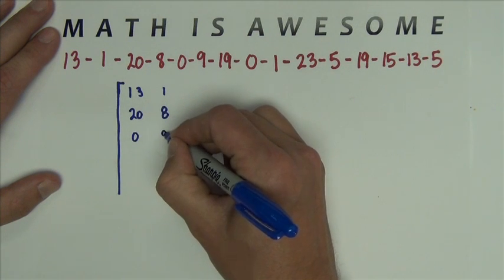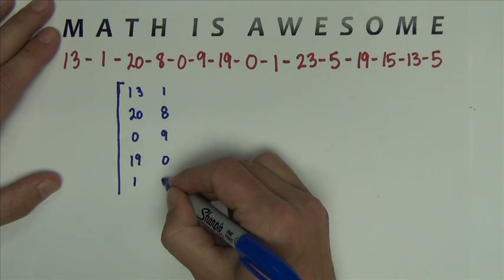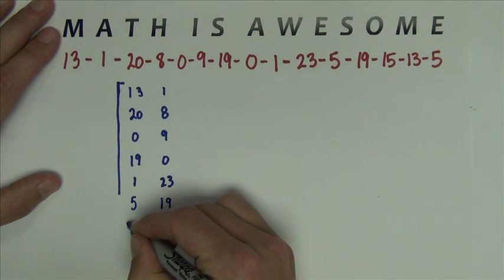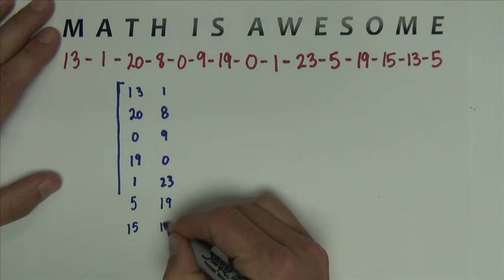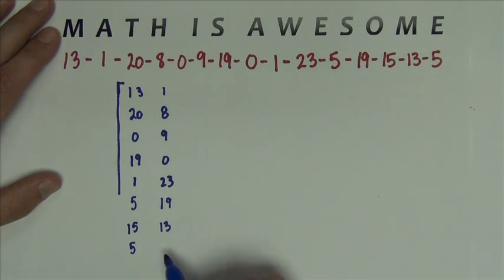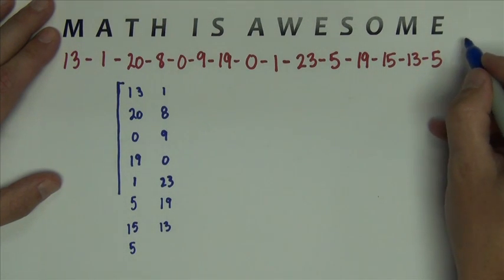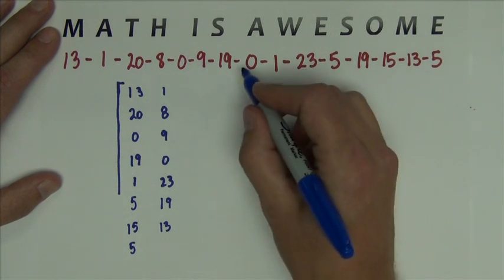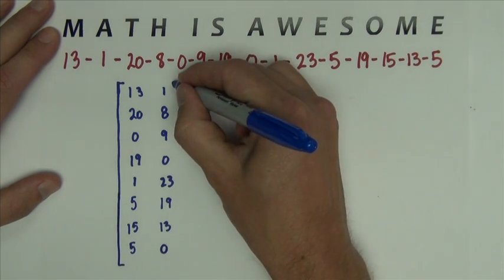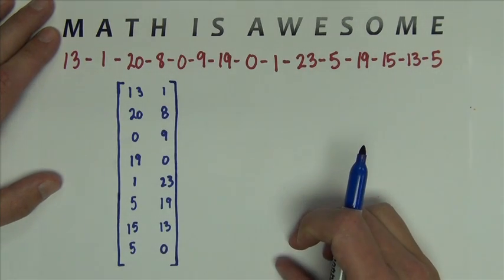Next is going to be 0 and 9, 19, 0 and 1, 23 and then 5, 19 and 15, 13 and then 5. And I'm at the end of my message, but I don't have a complete matrix here at the bottom. So what I'm going to do is just pretend that I've got a 0 at the end or a space at the end of this message. So I'm just going to add a space at the end so it completely fills in my matrix. So there's my message placed into a matrix.